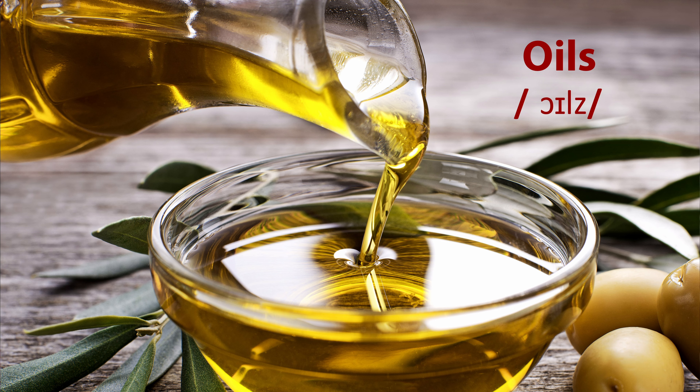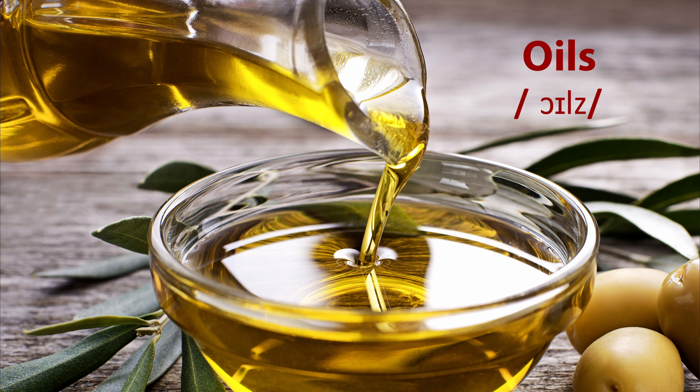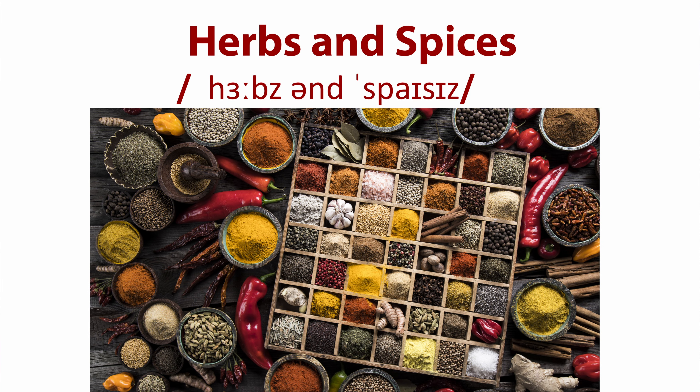Oils — we could talk about the many different types of oils. This particular word, oil, can actually refer to a lot of different types of products. But when we're talking about food, we're talking about extracts from food to make different types of oils that you can use in cooking. Oils add a lot of flavor to our foods. When we're cooking up some delicious meals, we'll want to add some herbs and spices.